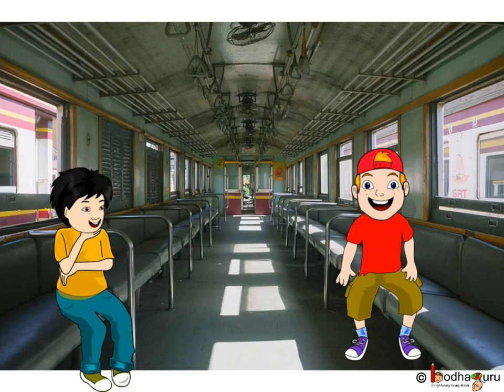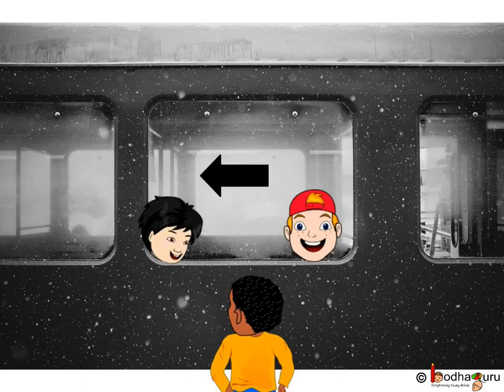So motion can also be relative to something. If you are sitting in a train, a co-passenger would appear still to you. But for someone looking at the train from the road, both you and your co-passengers are moving along with the train.